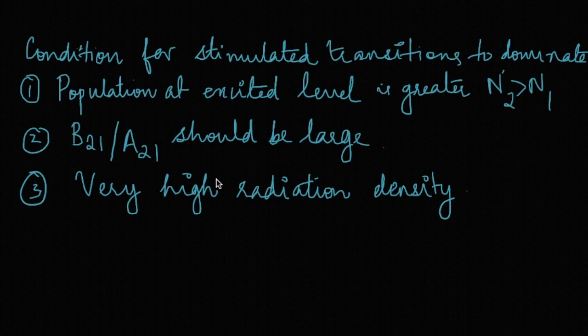Second point is the ratio B21 by A21 should be large. And third one is that there should be a very high radiation density in the medium. So a medium will amplify light only when these three conditions are fulfilled. That is about the condition for light amplification. Thank you.